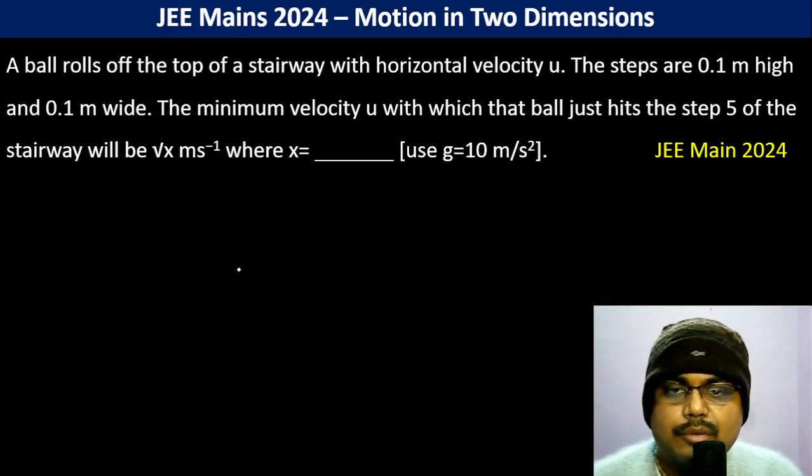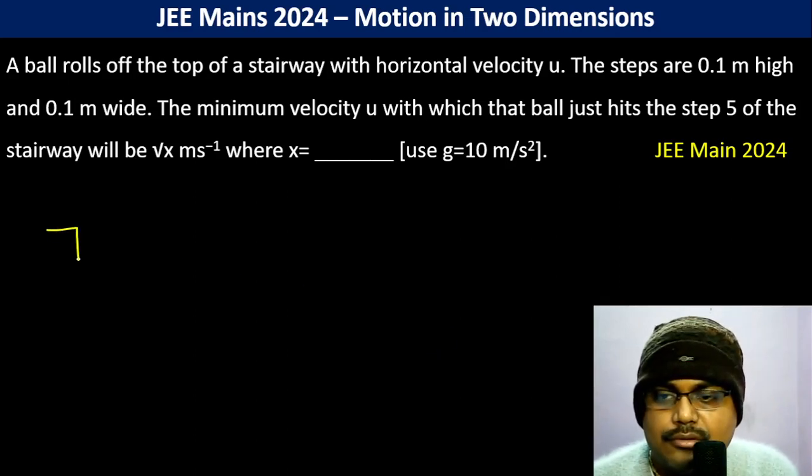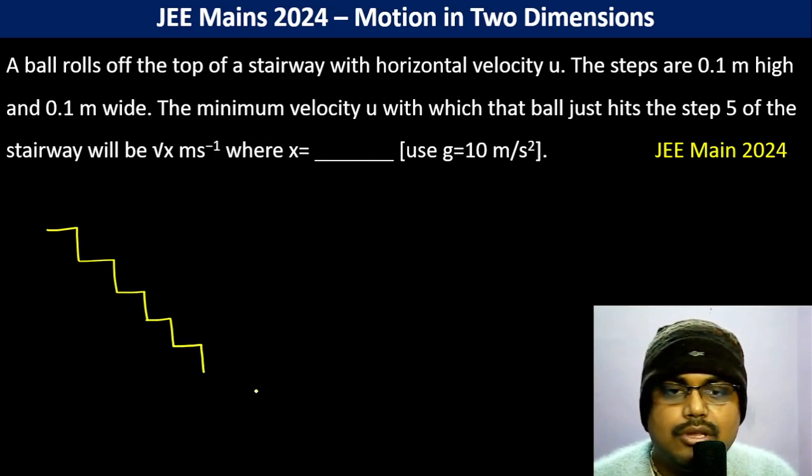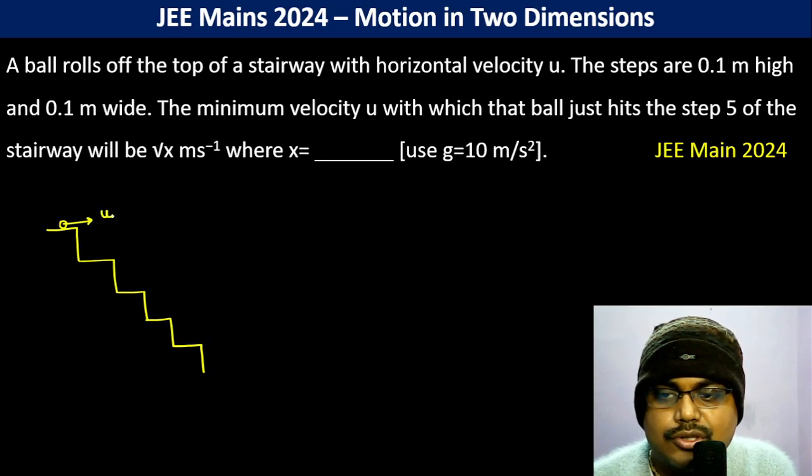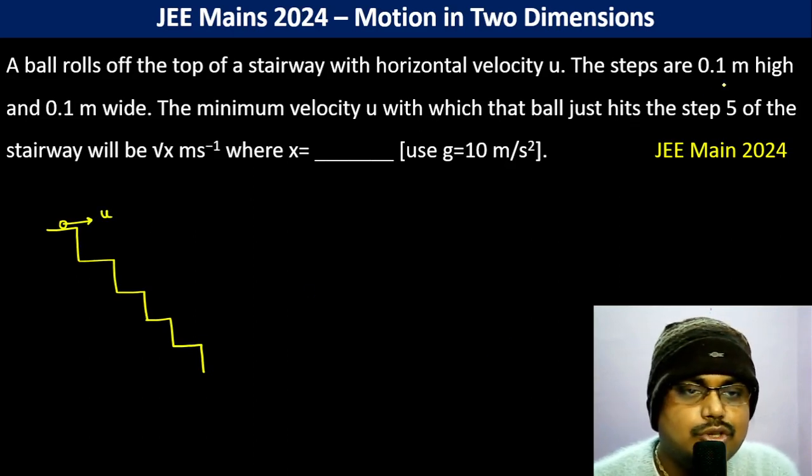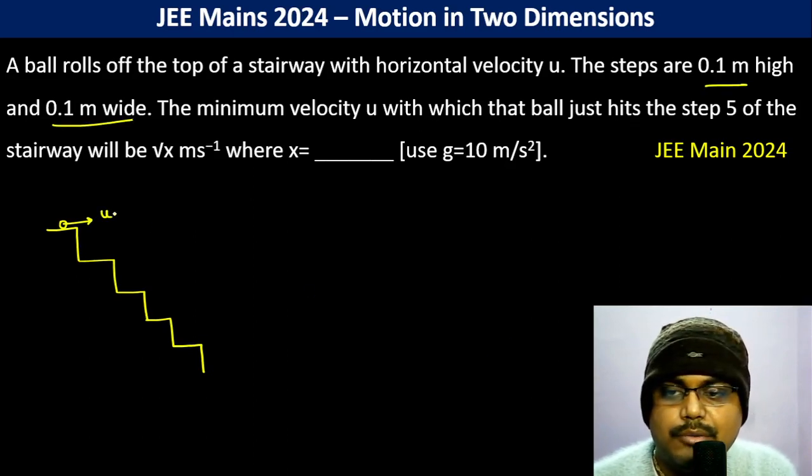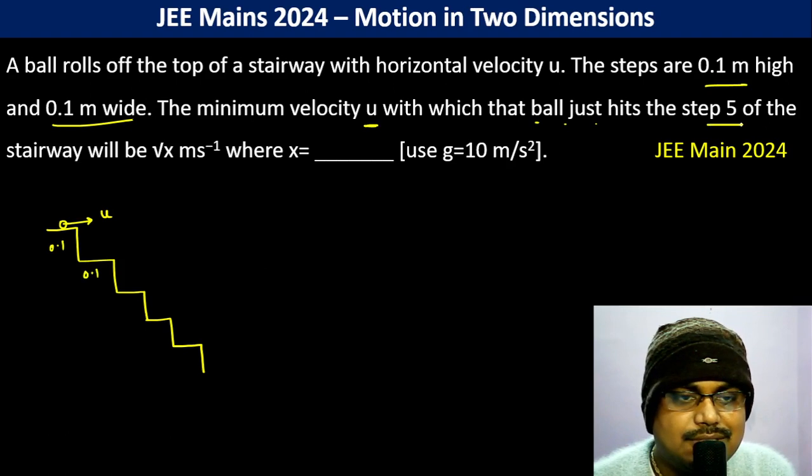The ball rolls off the top of a stairway with horizontal velocity u. The steps are 0.1 meter high and 0.1 meter wide. The minimum velocity u with which the ball just hits the step 5 of the stairway will be root x meters per second.